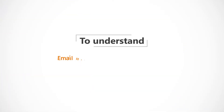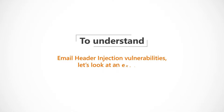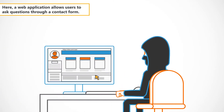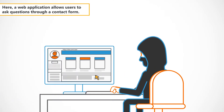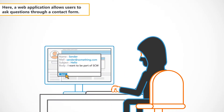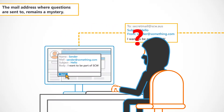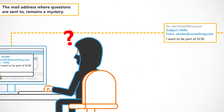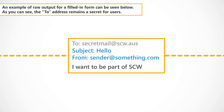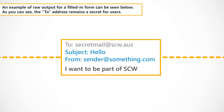To understand email header injection vulnerabilities, let's look at an example. Here, a web application allows users to ask questions through a contact form. The mail address where questions are sent to remains a mystery. An example of raw output for a filled-in form can be seen below.